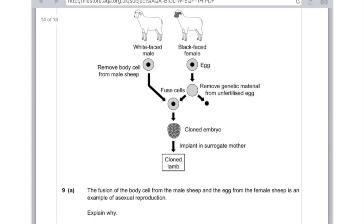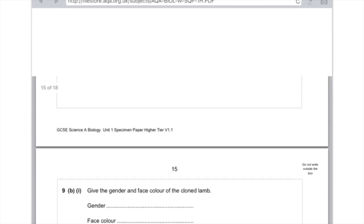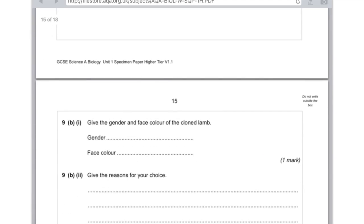Remember it's the body cell which always contains the genetic information of the animal that we're trying to clone. So bearing that in mind, we know that this new baby sheep will be white-faced and it will be male.